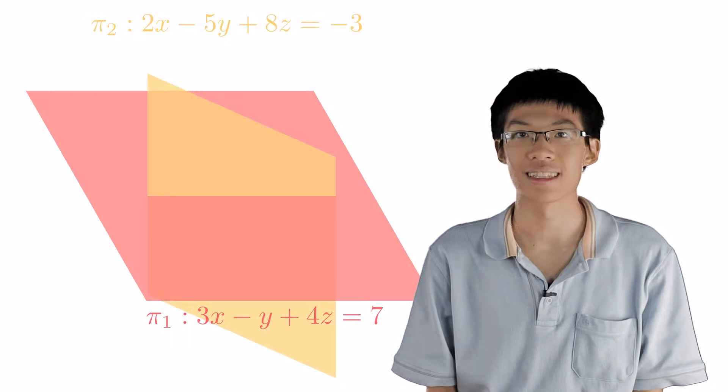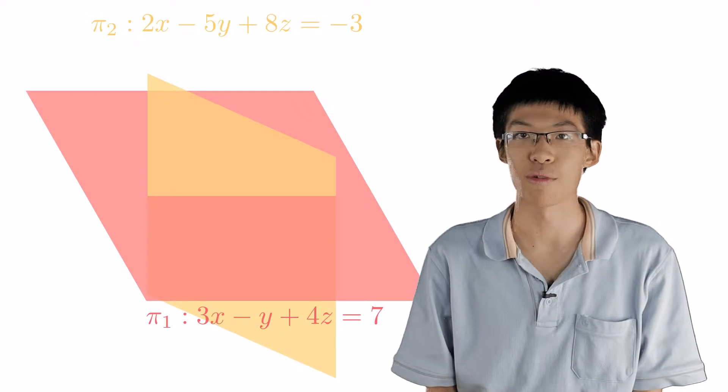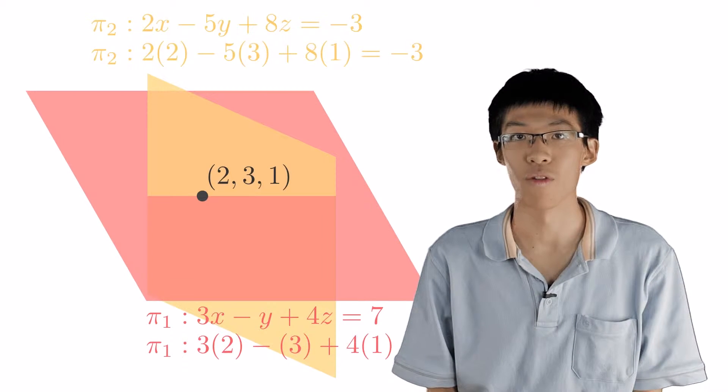An intersection point of two objects, say two planes pi1 and pi2, is a point that is on both planes.